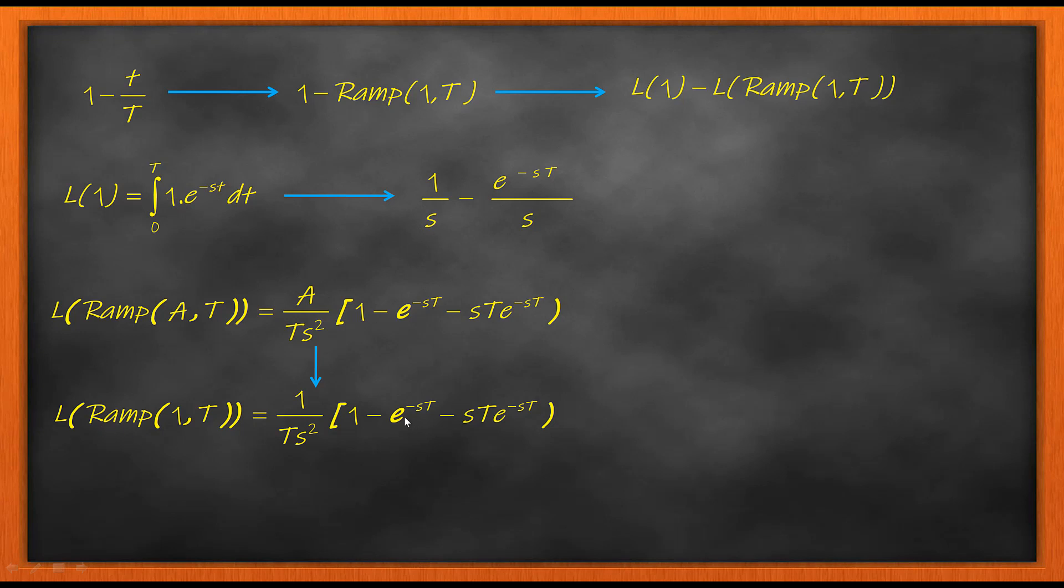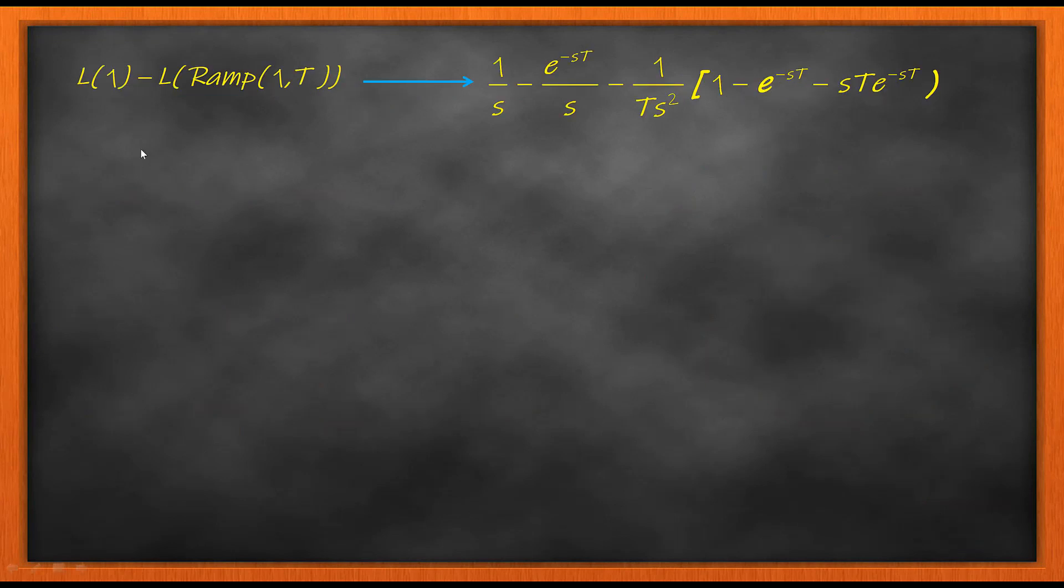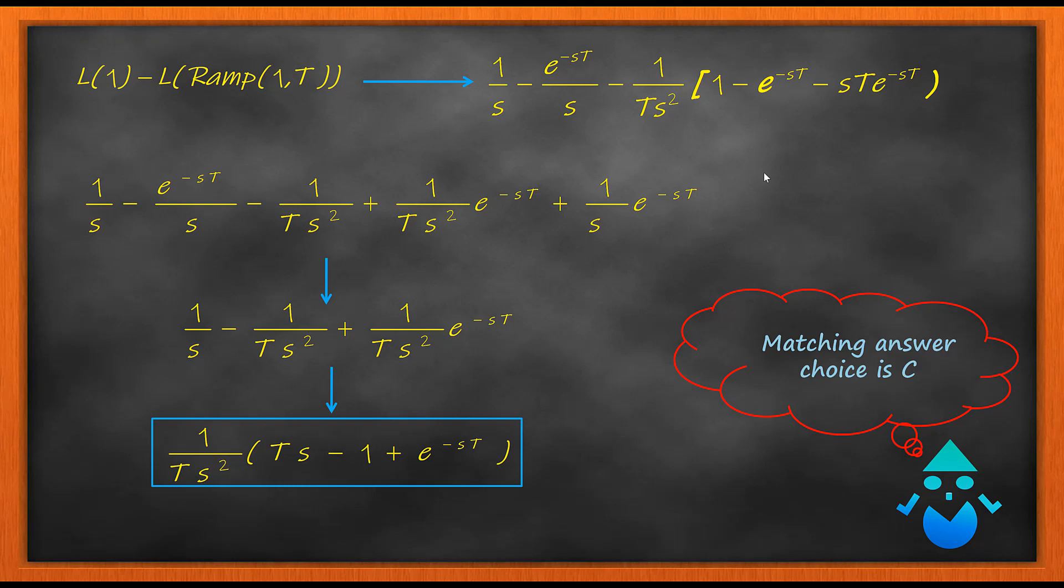From the previous question we get this ramp formula. So always you need to check whether the question is for positive or negative ramp and modify your equation accordingly. Now applying both these Laplace transforms and taking the difference and simplifying, you get your matching answer choice.